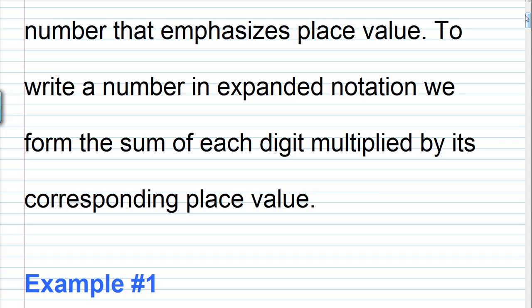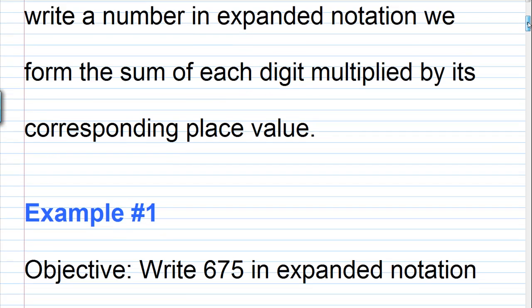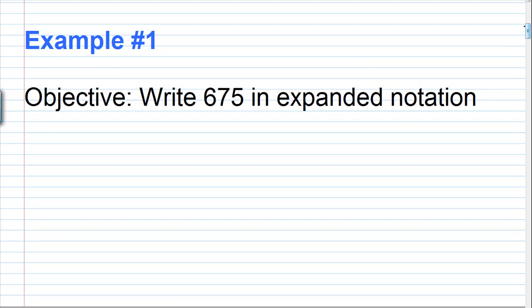So let's jump right in here, look at an example, and I'll explain it to you as we work through the example. For our first example, our objective is to write 675 in expanded notation. So what you're going to do is you're going to take this number, 675.